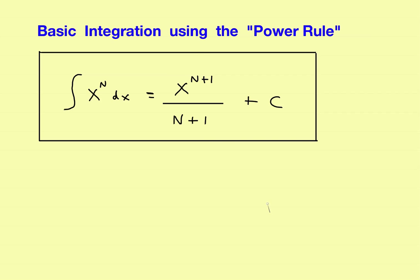Let's take a look at basic integration using the power rule, but this time let's apply it to radical expressions. The rule will still be the same: increase the power by one and divide by the new exponent. But before we look at some examples, let's take a quick look at how to change radical expressions from radical form into fractional form.